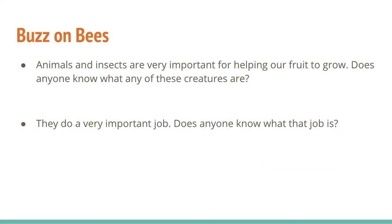Think to yourself — we are aware that animals, insects, invertebrates, bacteria, fungi — all these things are very important for helping our foods to grow. But do you have any guesses as to what some of these might be? Obviously one of these is bees. But take a second to think to yourself or maybe even write down on a piece of paper what other insects, animals, bugs, or fungi are going to help us make our food.